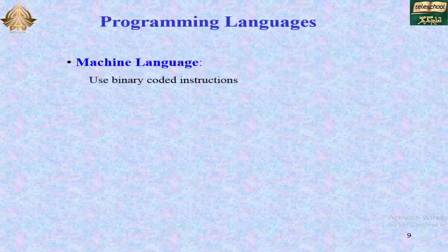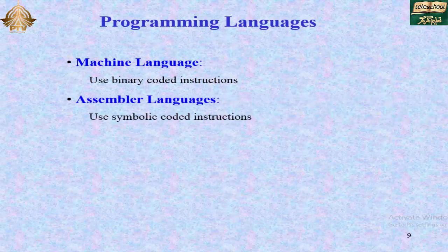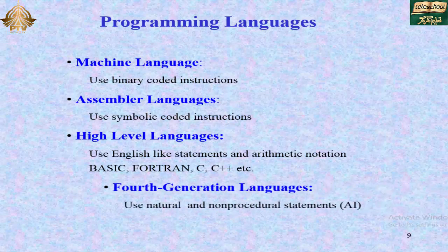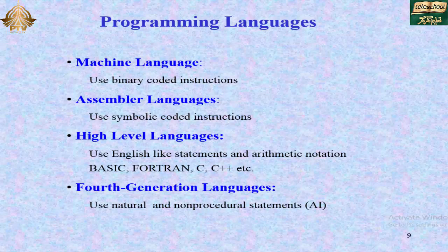Programming languages include machine language, which uses binary coded instructions; assembler language, which uses symbolic coded instructions; high-level languages, which use English-like statements and arithmetic notation such as Basic, C, C++, etc.; and fourth-generation languages, which use natural and non-procedural statements.